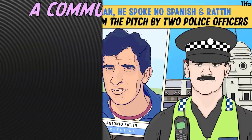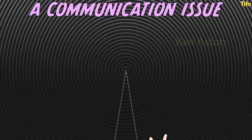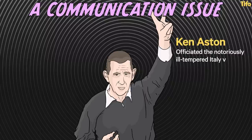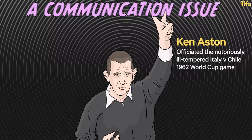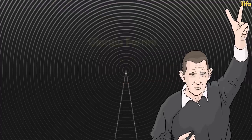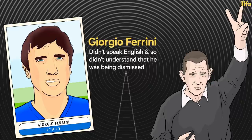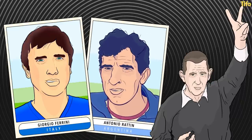This communication issue had been troubling former referee Ken Aston for some time. Aston was a British schoolteacher by trade and had officiated the notoriously ill-tempered game between Italy and Chile at the 1962 World Cup — the Battle of Santiago, as it came to be known. Aston sent off two players in that game. One of them, Giorgio Ferrini, didn't speak English and so didn't understand that he was being dismissed, initially refusing to leave the pitch. Again, it had made a fractious situation worse.